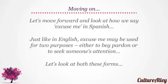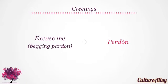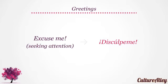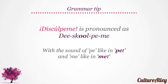Let's move forward and look at how we say excuse me in Spanish. Just like in English, excuse me may be used for two purposes — either to beg pardon or to seek someone's attention. Excuse me when used to beg pardon translates to perdón. However, for seeking someone's attention, excuse me translates to disculpeme. Disculpeme is pronounced as disculpeme, with the sound of pe like in pet and me like in met.